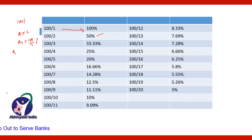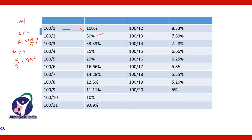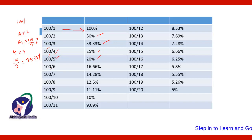If A finishes the work in three days, it means in one day he finishes 100 by 3, which is 33.33%. If A finishes a work in four days, then in one day he will finish 100 by 4, that is 25%. If A finishes a work in five days, then in one day he will finish 100 by 5, that is 20% of the work.